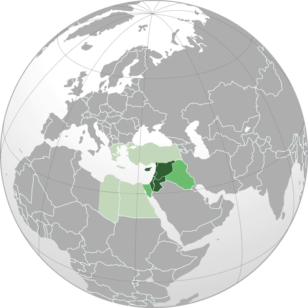The term entered English in the late 15th century from French. It derives from the Italian Levante, meaning 'rising', implying the rising of the sun in the east, and is broadly equivalent to the Arabic term Al-Mashriq, meaning 'the land where the sun rises'.